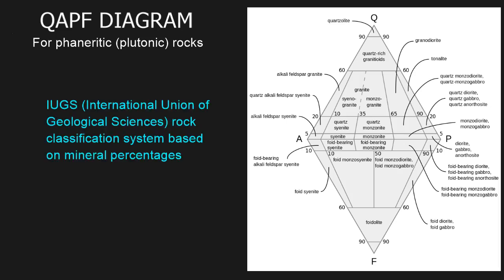So what is a QAPF diagram? A QAPF diagram is a method to classify rocks based on their mineral percentages. That is, it gives a naming convention to igneous rocks based on the percentage of minerals in that rock. It's basically the standard to classify igneous rocks.